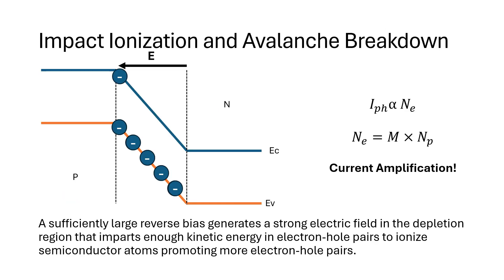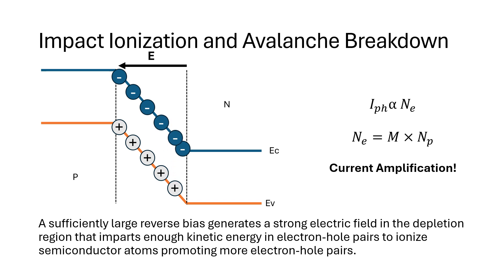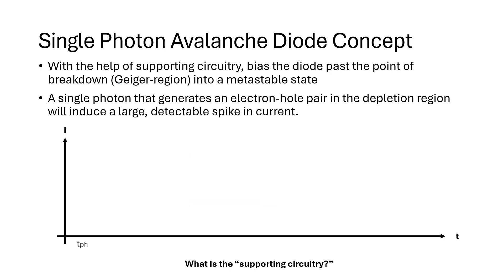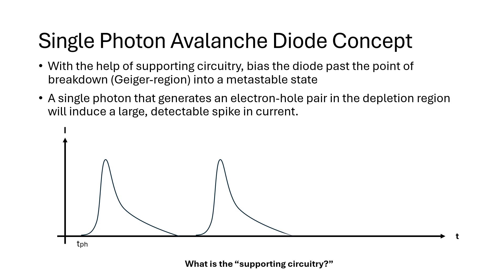Back to avalanche breakdown: if we reverse bias the junction far enough, we build a strong enough electric field in the depletion region to accelerate carriers to high enough energies to promote more carriers via impact ionization. These can then in turn generate more carriers, giving us a positive feedback cycle of increasing current in the junction. If the source of the initial electron hole pair is a photon, we essentially amplify our photocurrent by a large enough factor that we can detect a spike. So this is the overall idea of the SPAD: if we bias the diode past the breakdown voltage into a metastable state, we can prime the device to generate a significant current spike from a single photon. These spikes are fast and thin in time, allowing the potential for timestamping spikes, which is also conducive to a digital readout.